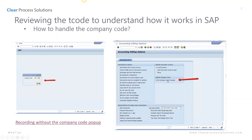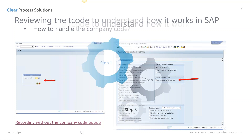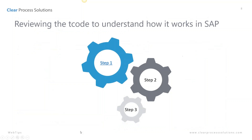So you'll want to turn off your default company code — check it so that there's no default — that will require the pop to come up, and then each time you can change the company code based on that transaction. You'll see this throughout the presentation; we'll go over this again and show you actually how to do that.